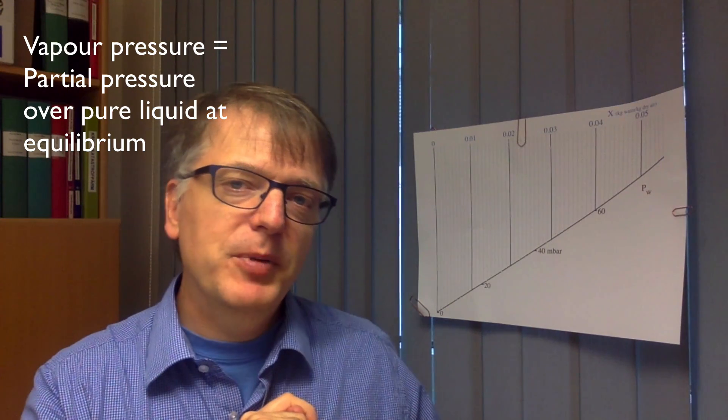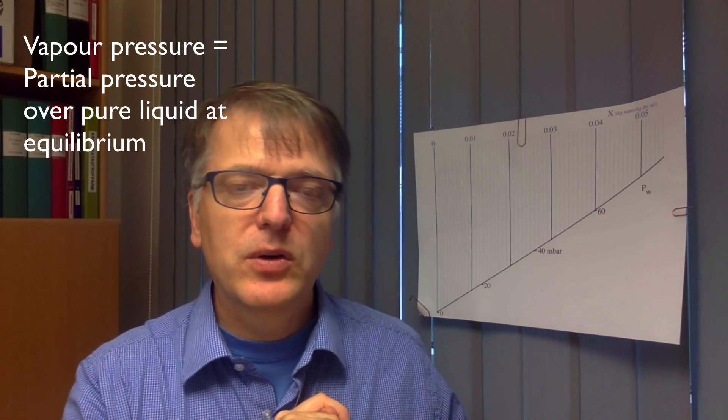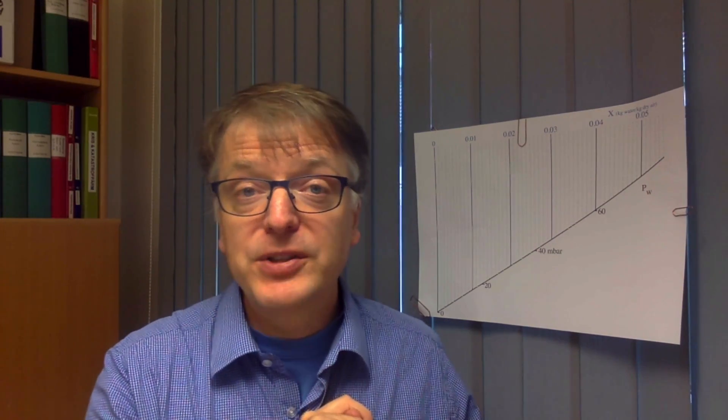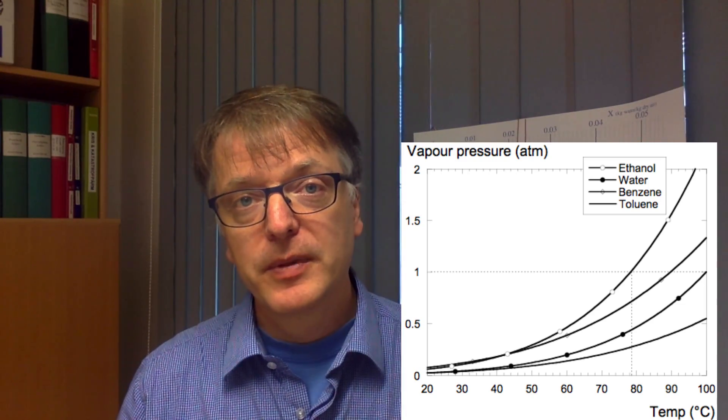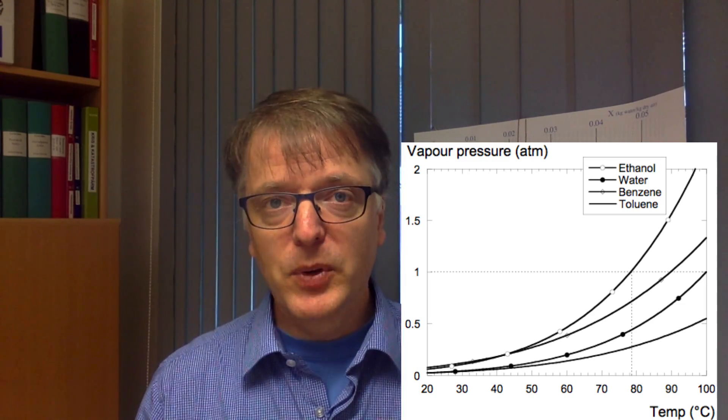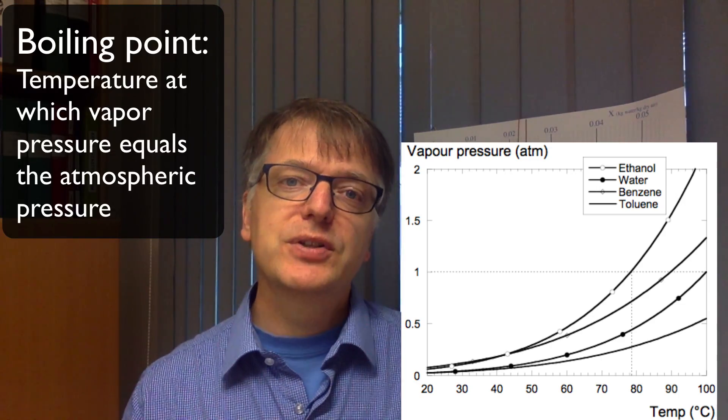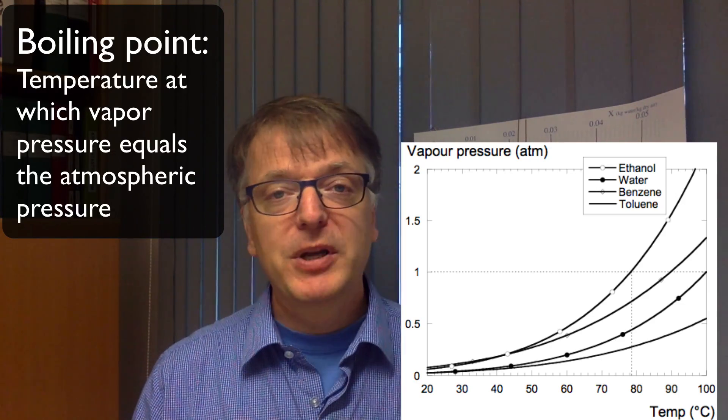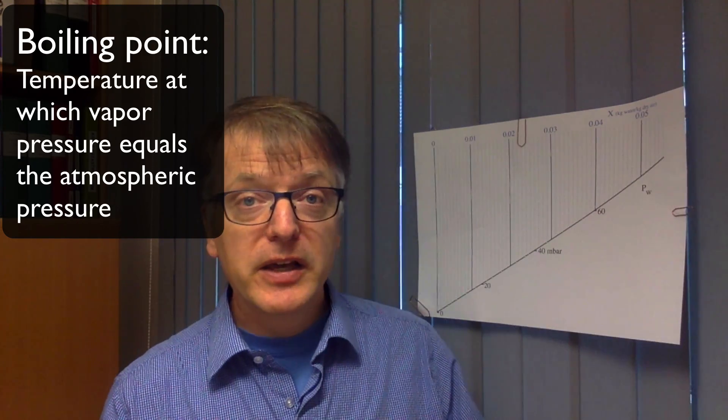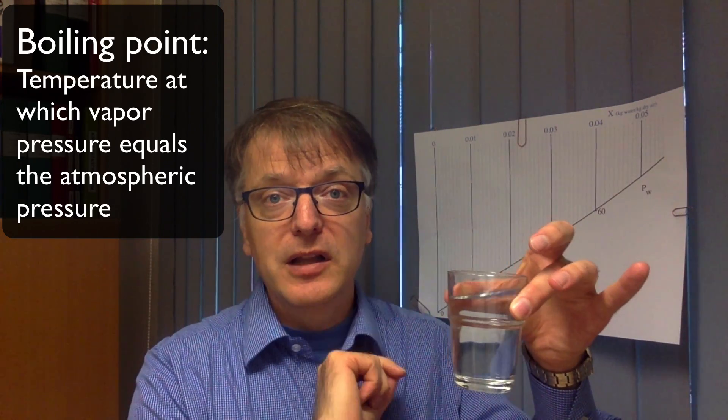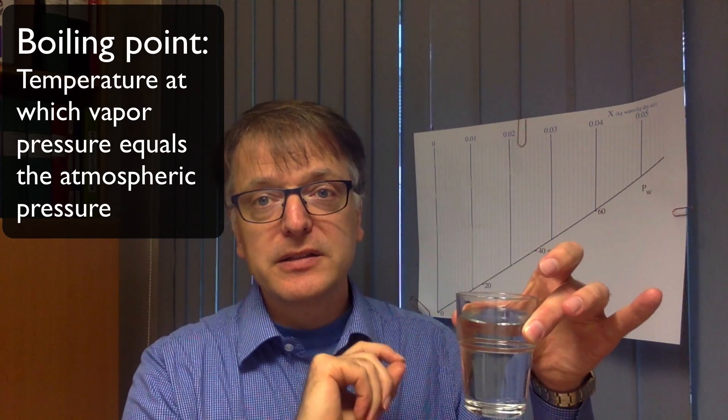Now, the vapor pressure is heavily dependent on the temperature and the vapor pressure increases exponentially as the temperature goes up. What then is the boiling point? Well, the boiling point is the temperature at which the vapor pressure equals the atmospheric pressure. So then a gas bubble can form in the liquid and expand and push away the atmosphere around it. That's the boiling point.